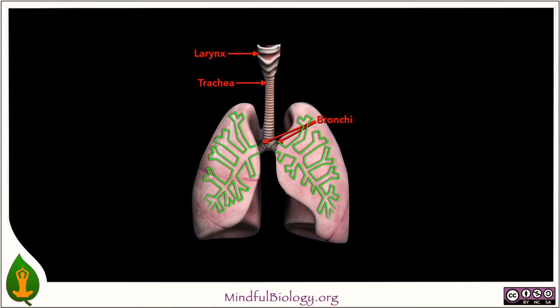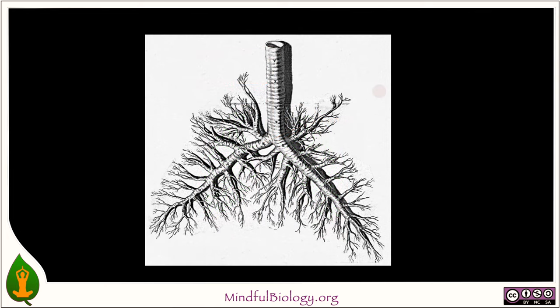The bronchi further divide within the lungs, creating a branching structure rather like an inverted tree. Here we see a more realistic representation of that tree, and you can see how dense the branching becomes — progressing from rather thick limbs, the main bronchi, down to very slender twigs at the tips.